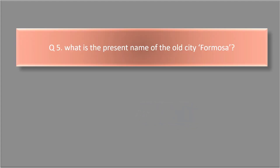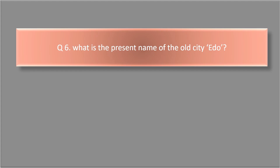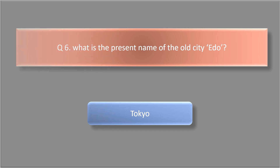What is the present name of the old city Formosa? The answer is Taiwan. What is the present name of the old city Edo? The answer is Tokyo.